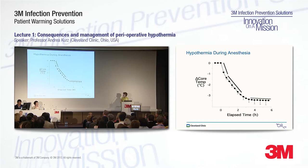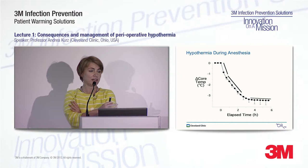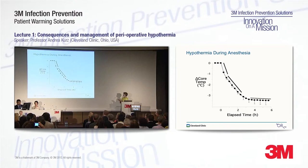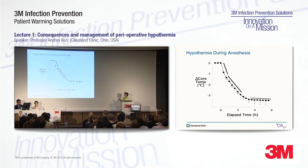Hypothermia during anesthesia always develops in a very characteristic pattern. Looking at this curve, at the beginning of anesthesia core temperature drops fairly quickly — about one degree. Then we have a slow, linear further decrease of core temperature.